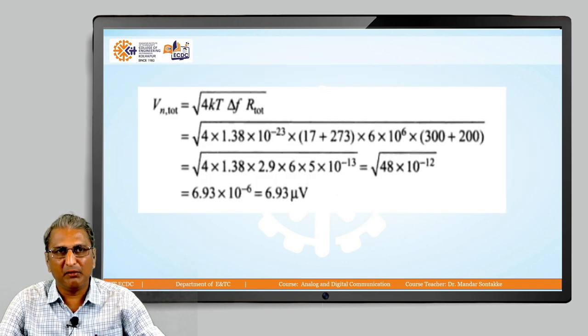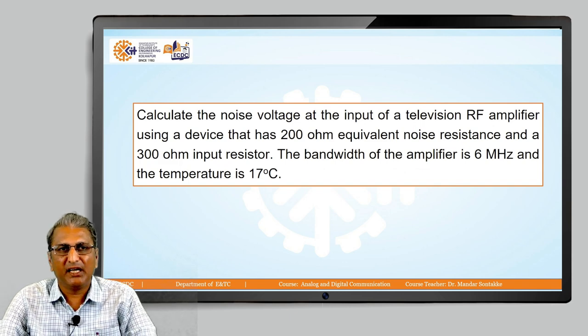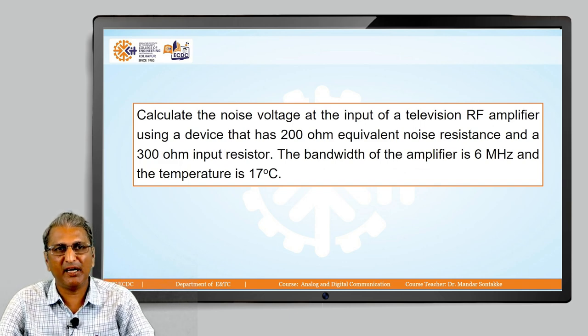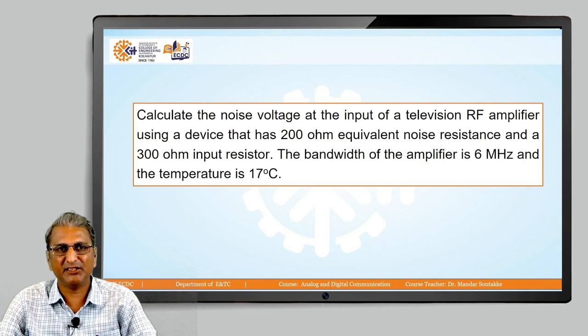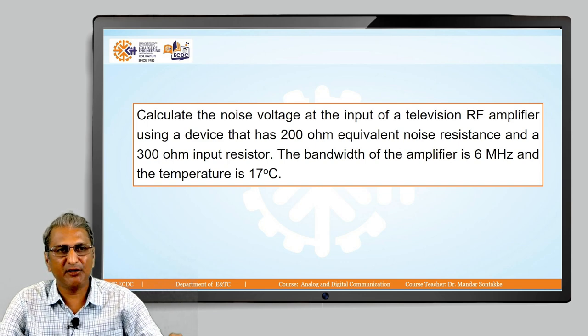By using this equation, we have one example. Calculate the noise voltage at the input of a television RF amplifier using a device that has 200 ohm equivalent noise resistance and 300 ohm input resistor. The bandwidth of the amplifier is 6 MHz and the temperature is 70°C.